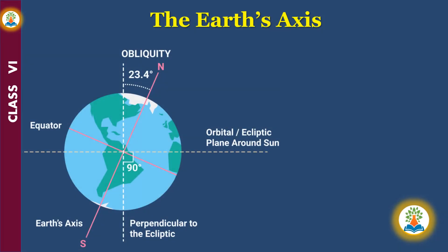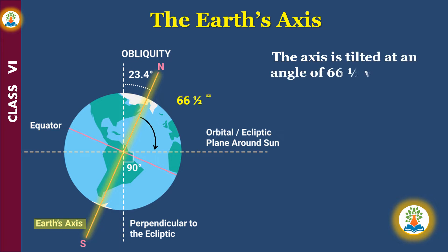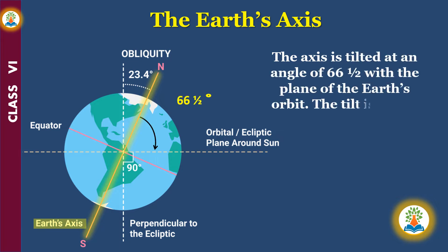In previous chapters we learned about axes, longitudes and latitudes. The imaginary vertical line is called an axis. The axis is tilted at an angle of 66 and a half degrees with the plane of the Earth's orbit. This tilt is called the inclination of the Earth's axis.